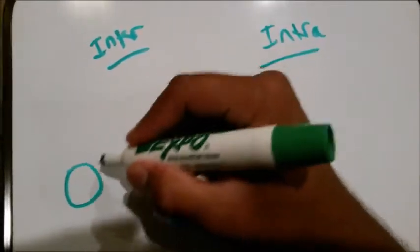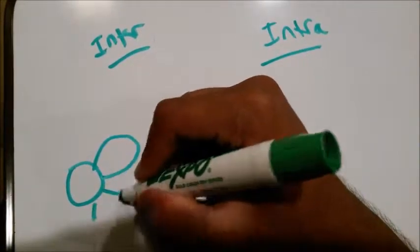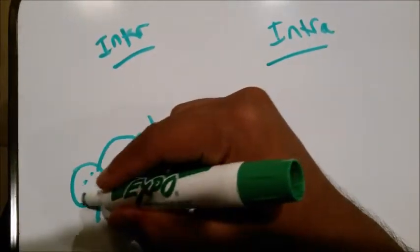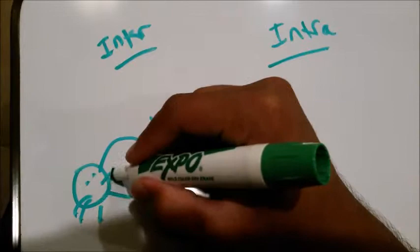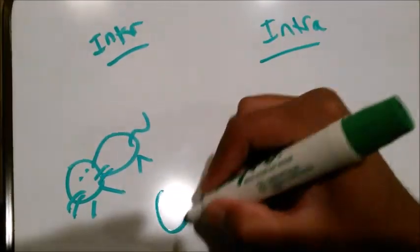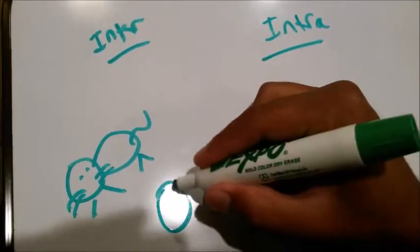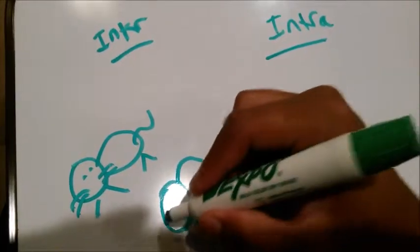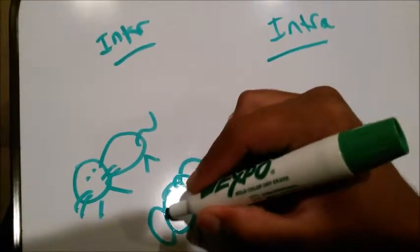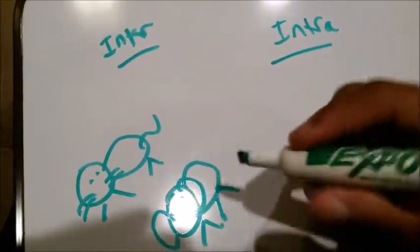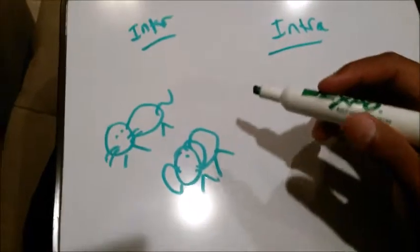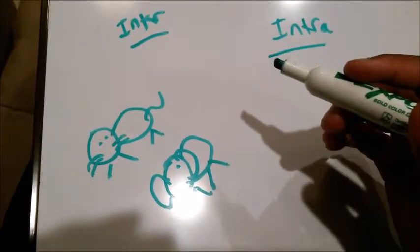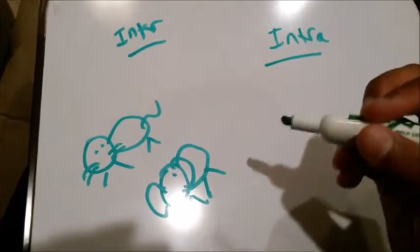Here's a cat and here's a dog. These are different types of species and they're competing for the resources in the ecosystem.